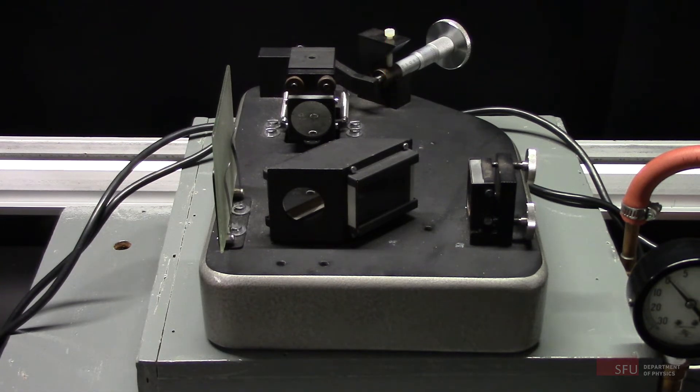Note that the micrometer acts at an angle, so you will need to find a conversion factor between the micrometer motion and the mirror displacement. This is usually done empirically.